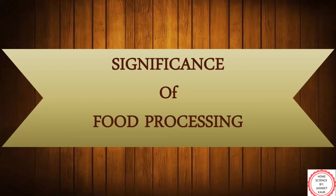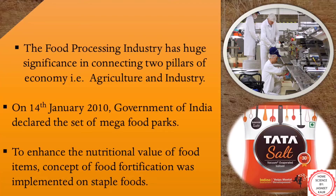Let's move to the significance of food processing. The food processing industry, or FPI, has huge significance in connecting two pillars of the economy — agriculture and industry. Globalization has increased the demands for various types of products, making research for newer technologies necessary. On 14th January 2010, the Government of India announced the setting up of mega food processing parks to boost the food processing industry in India.